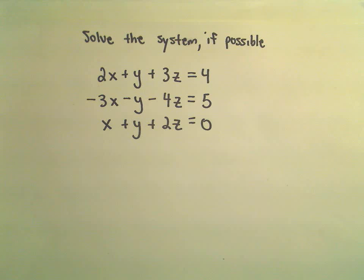2x plus y plus 3z equals 4. We've got negative 3x minus y minus 4z equals 5. x plus y plus 2z equals 0.